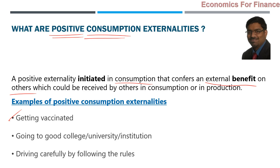Actually, studying properly itself is a very good positive consumption externality. Going to a good college, university, or institution and studying a good course — such as joining chartered accountancy and finishing the course — is a positive consumption externality. It is going to create a lot of benefit to the entire society. Without this education, opportunities are limited; with it, a person can motivate and influence others, give knowledge, earn income and spend in the economy to boost it. The benefits are not restricted to the student alone — they accrue to the family and then to the entire society.